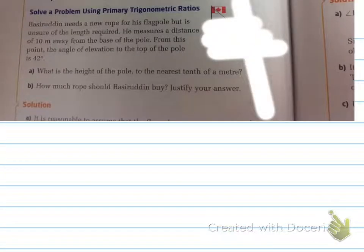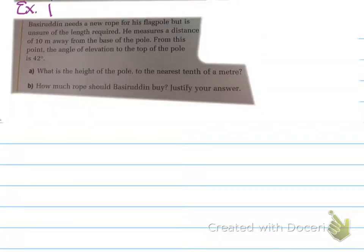Alright, let's look at this example, and what we need to do is determine the values here. So, Bazzi needs a new rope for his flagpole, but is unsure of the length required. He measures a distance of 10 meters away from the base of the pole. From this point, the angle of elevation to the top of the pole is 42 degrees.